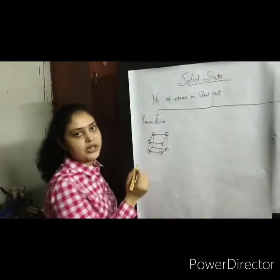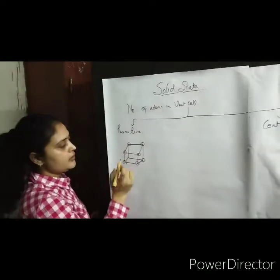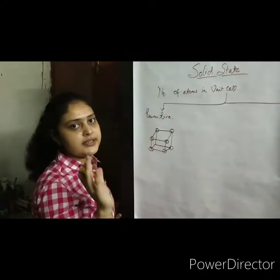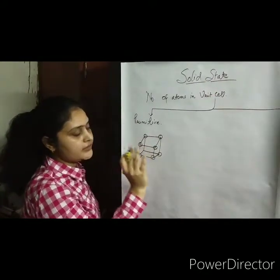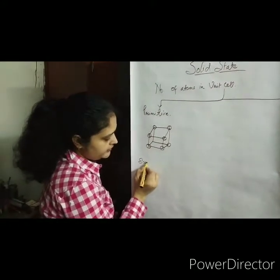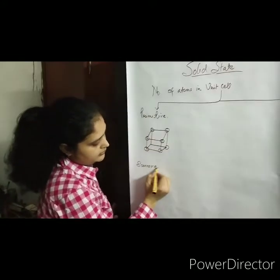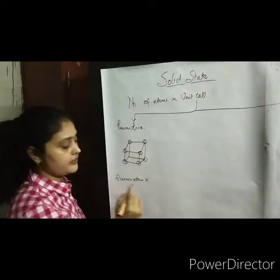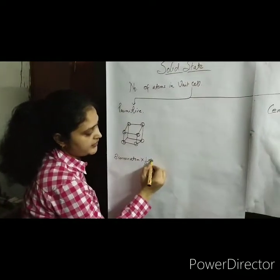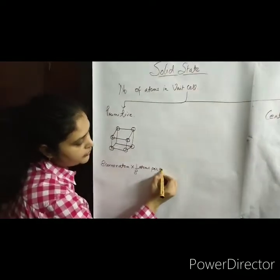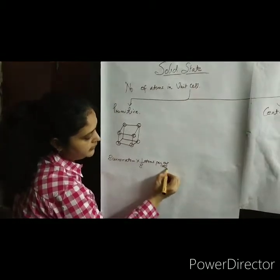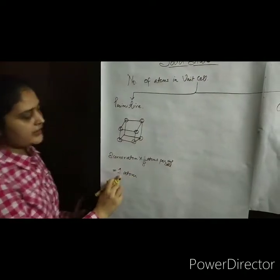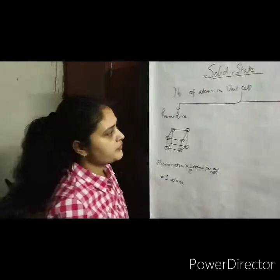In a primitive unit cell, how do we calculate the number of atoms? The atom at the corner is shared by eight unit cells, so its contribution is one-eighth. Eight corner atoms into one-eighth equals one atom. So one atom is present in a primitive unit cell.